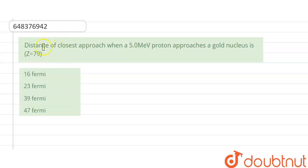Hello friends, our question is distance of closest approach when a 5 MeV proton approaches a gold nucleus, Z equals 79.